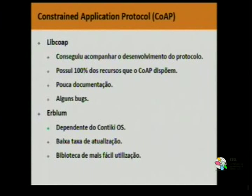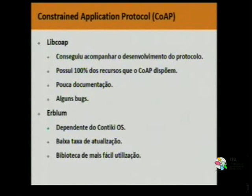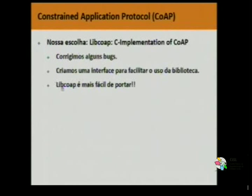Another problem was sparse documentation and small bugs when splitting information into many blocks. We had to fix those. Interestingly, when we corrected a bug and went to submit it, they had updated the entire codebase — everything changed. So we stabilized our own fork. Erbium also lagged behind as libcoap kept updating to track CoAP's constant evolution. So we chose libcoap for all implementations going forward, about seven or eight months ago. We fixed some bugs, created a simpler interface, and improved portability.